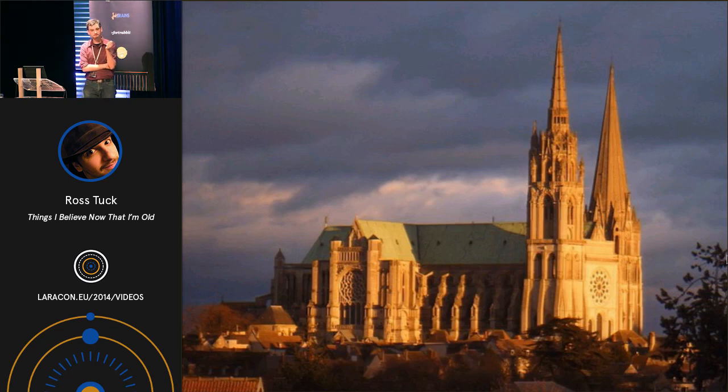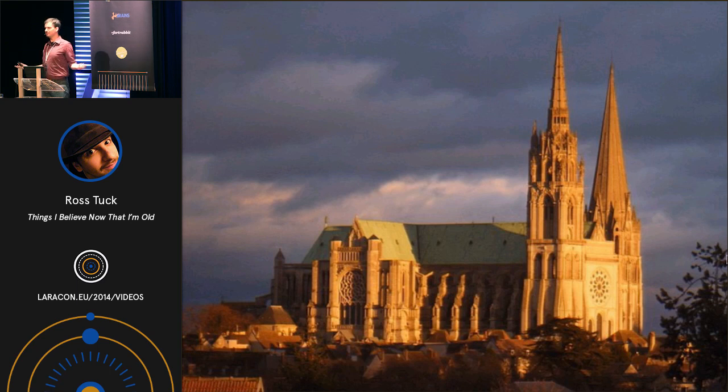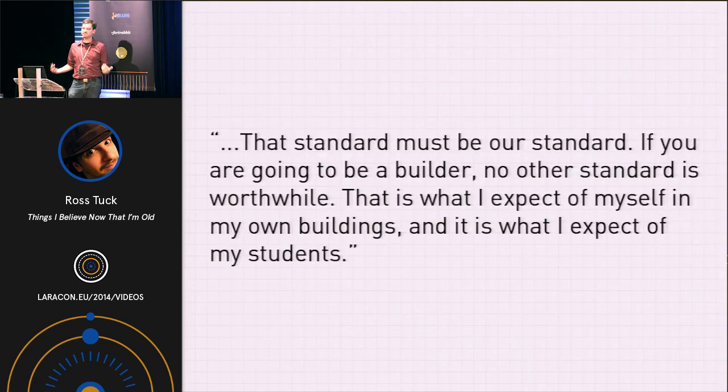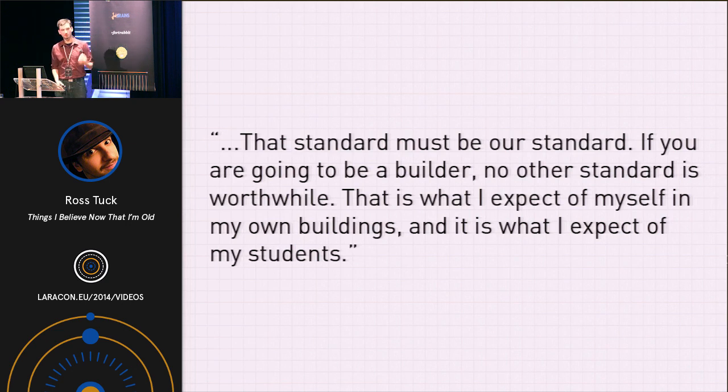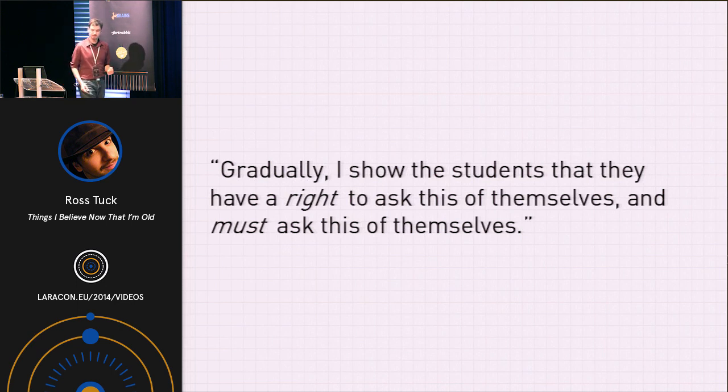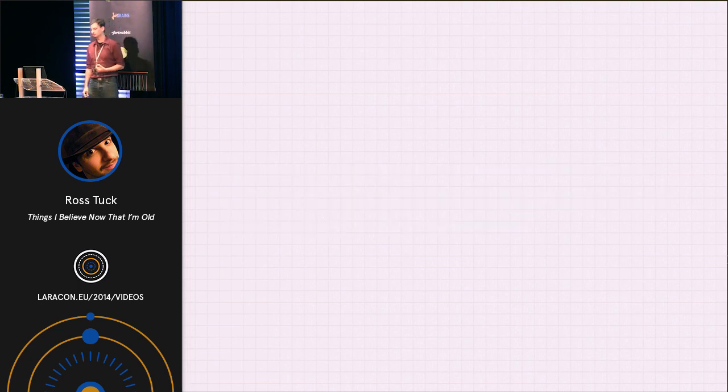And he says the student laughs at him, like she laughs in his face. And she says, no, of course not. That wasn't my intention. And let's face it, even if I wanted to, I could never be that good. And he writes about how this frustrates him. He says, that standard must be our standard. If you are going to be a builder, no other standard is worthwhile. That is what I expect of myself and my own buildings, and it is what I expect of my students. He goes on to say, gradually, I show the students that they have a right to ask this of themselves. And in fact, must ask this of themselves.